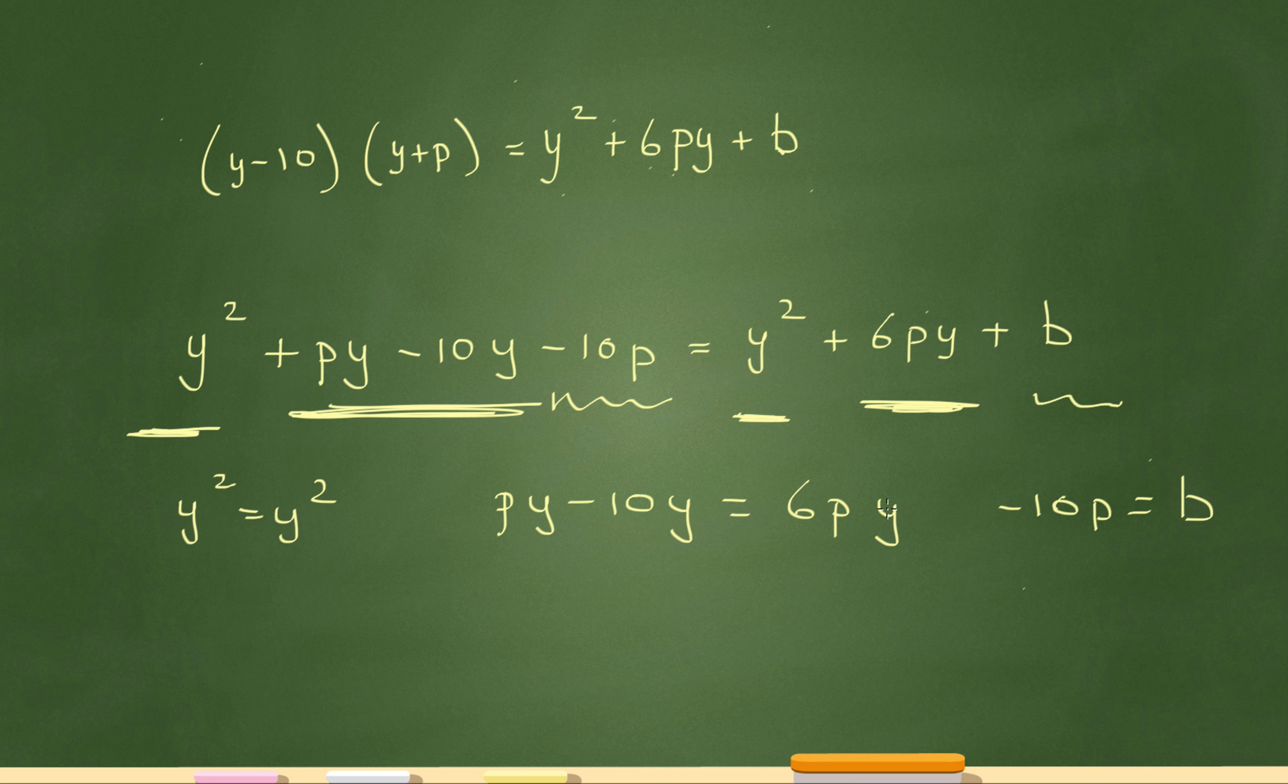So let's see. Over here, I'm looking at this one. I see there's a y that's common here, here, and here. So let's divide everything by y. Then I'm going to be left with p minus 10 equals 6p.